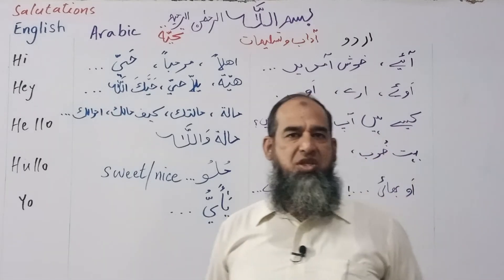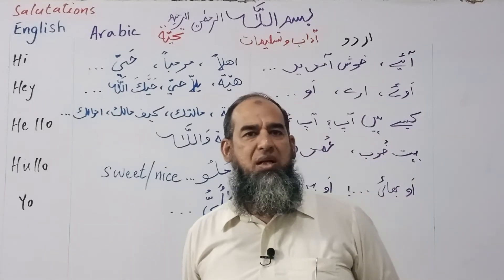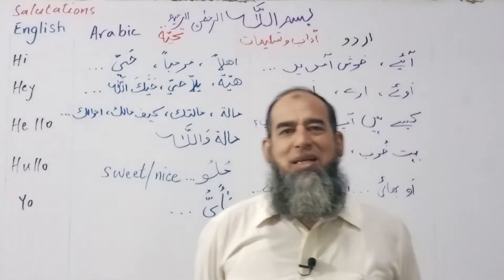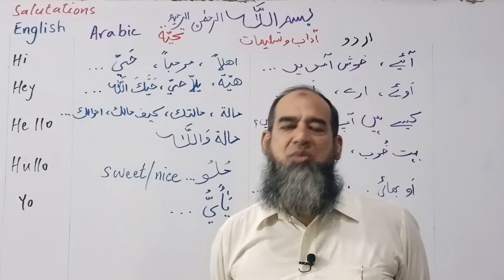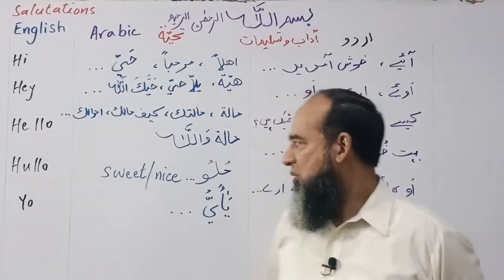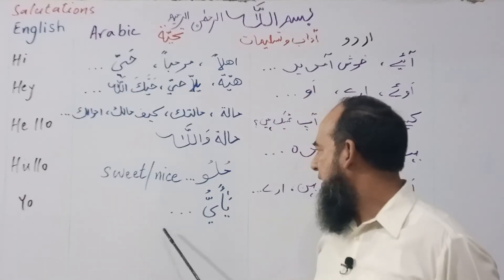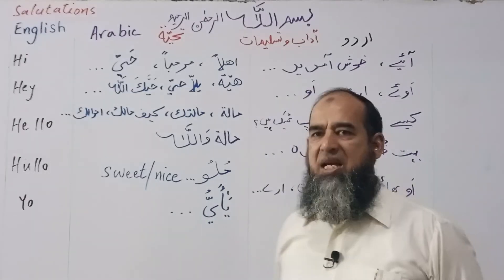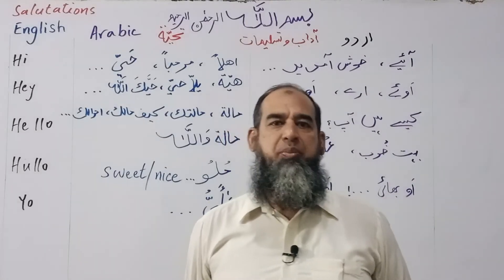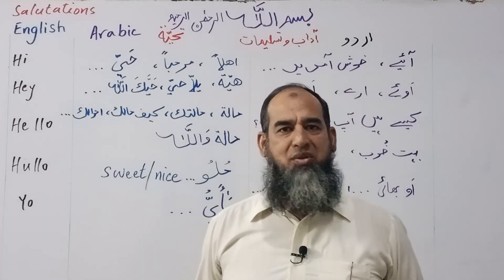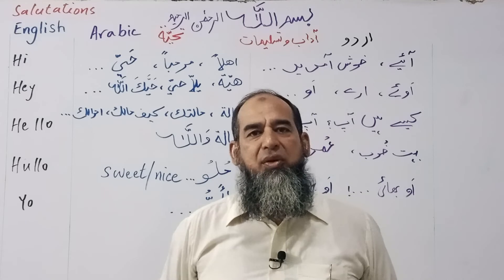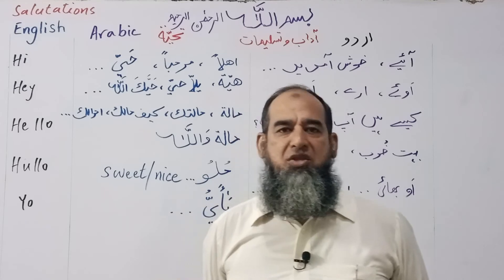And the last but not the least: 'yo.' This is a word used to show how intimate two people are. The equivalent in Arabic is 'ya hayyu,' like we say 'ya hayyu' and 'nas' — O people. So this is the same thing.